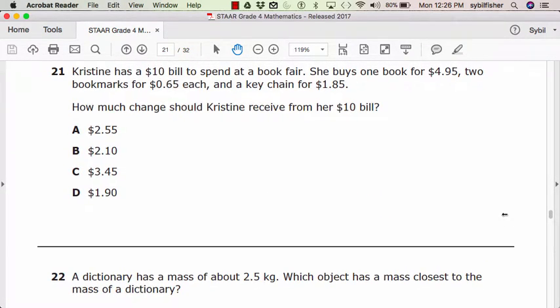Number twenty-one. Christine has a ten dollar bill to spend at a book fair. She buys one book for four dollars and ninety-five cents, two bookmarks for sixty-five cents each, and a keychain for a dollar eighty-five. How much change should Kristen receive from her ten dollar bill?